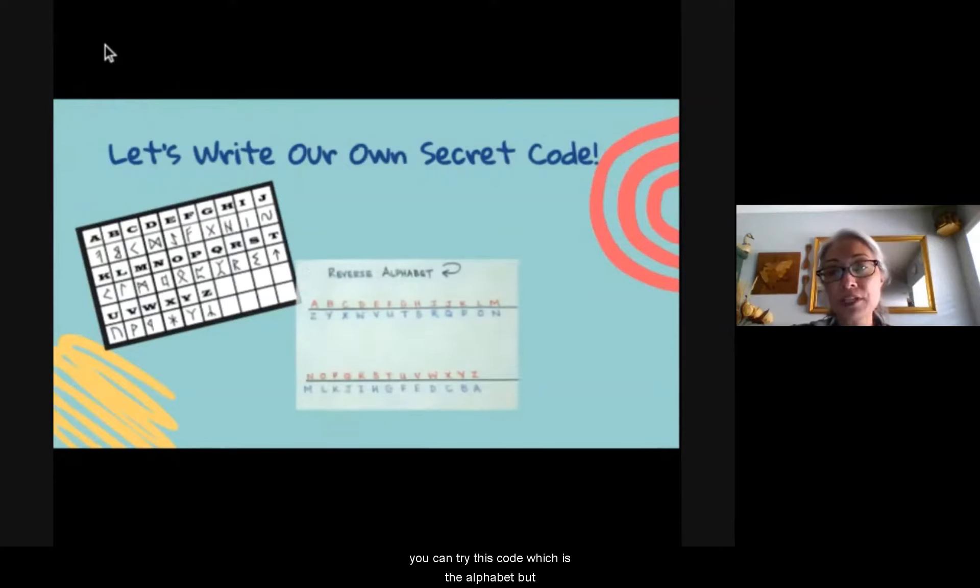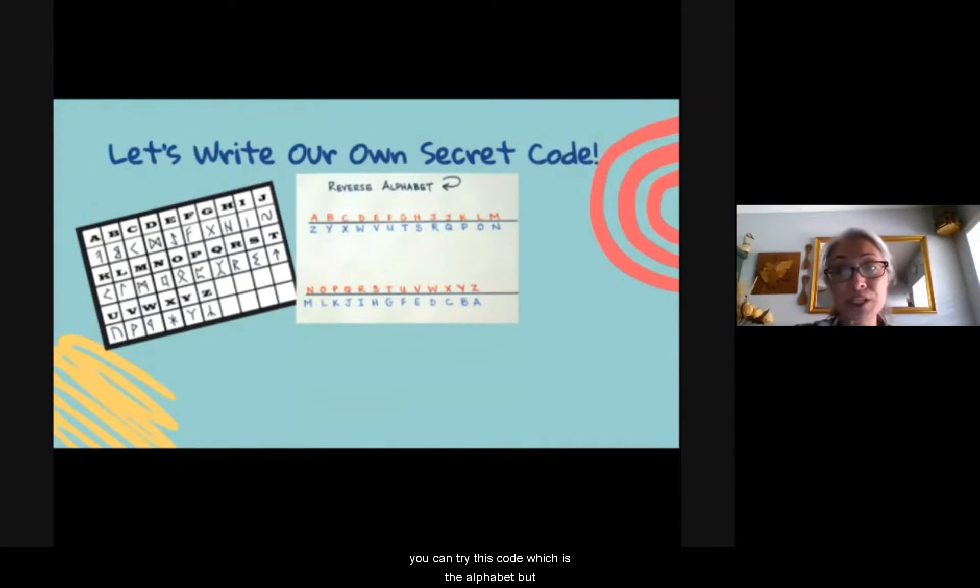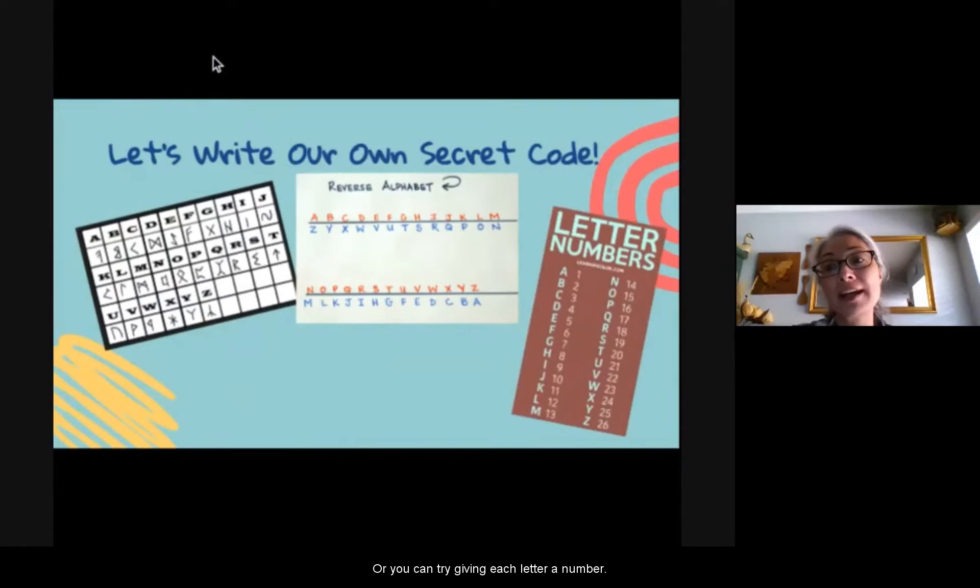Or you can try this code, which is the alphabet, but backwards. So first they've listed out the letters of the alphabet. And below them, they've listed what each letter is supposed to be.